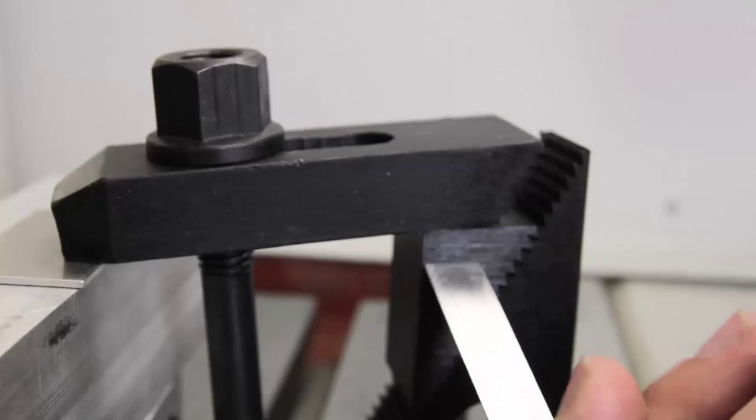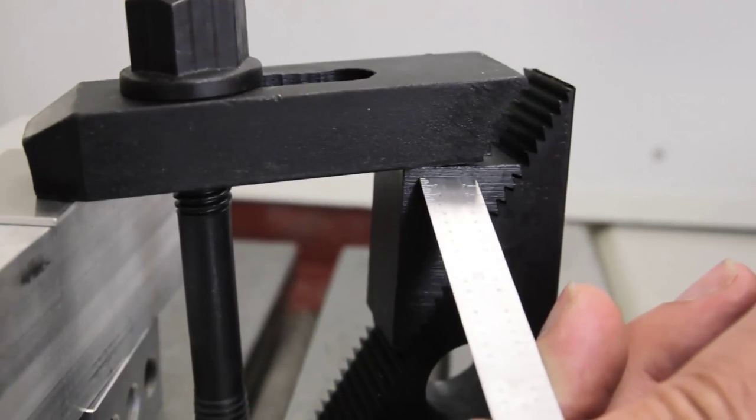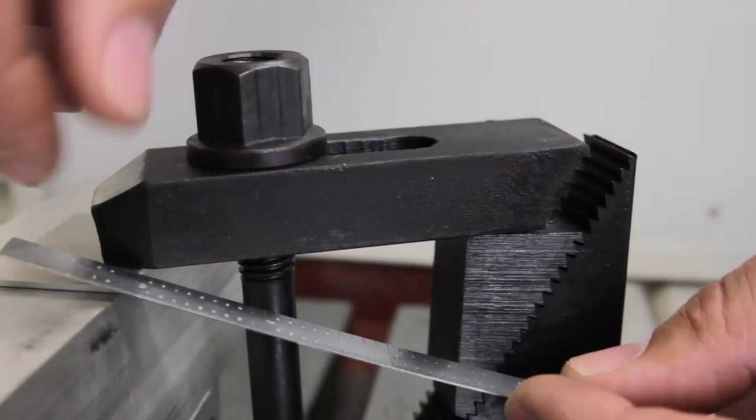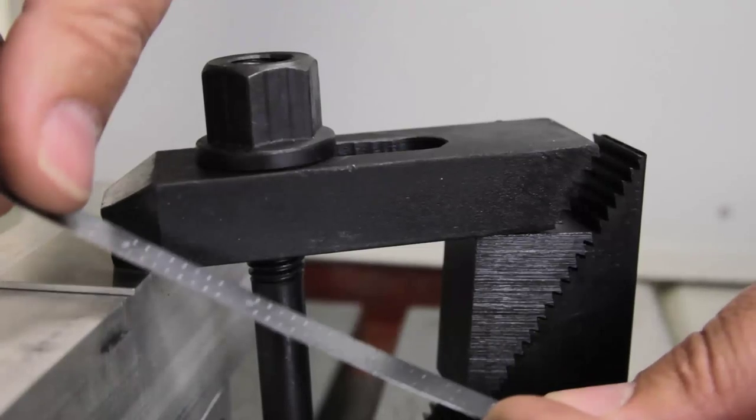The reason you have your step blocks higher than the work piece you're clamping on is so the nose of your clamp clamps down on your work piece. If you have your step blocks lower, then the bottom of your clamp will clamp on your work piece and it will actually push your work piece away.